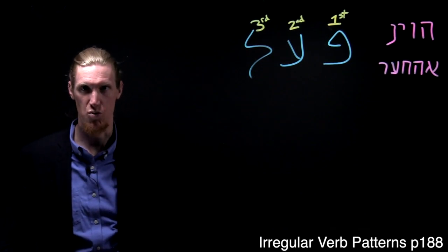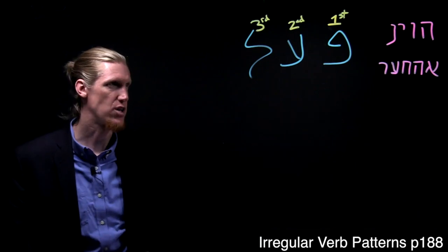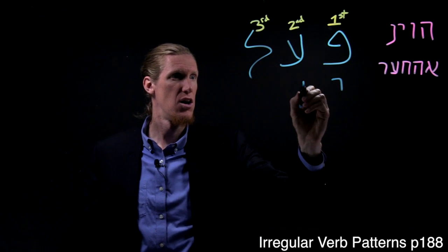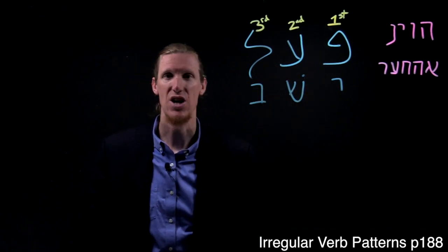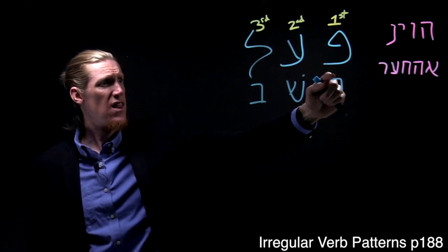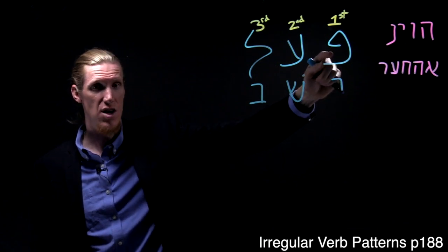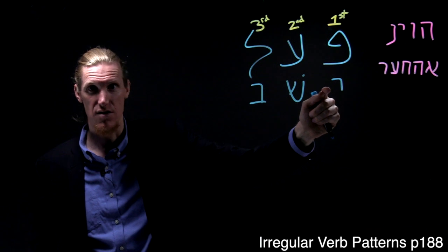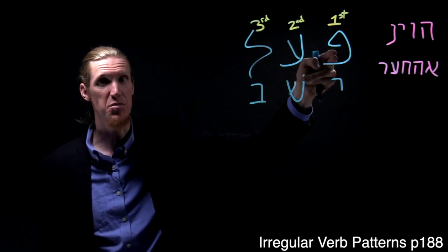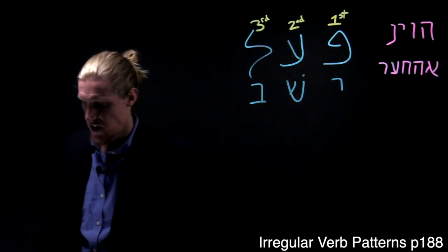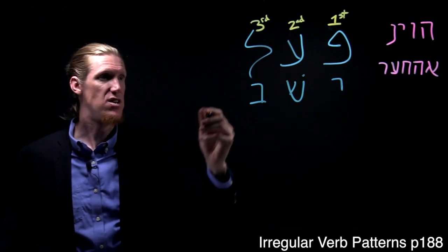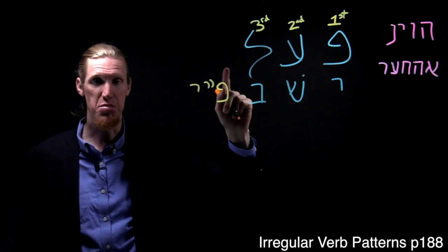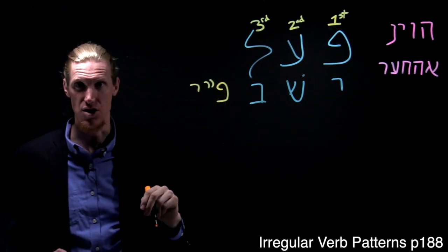Let me give you a couple of examples of words that fit into this. For instance, if we have the verb Yashav, the Yod is a weak letter, and that appears under Pei. It's the first letter in the root. Therefore, it's a Pei Yod verb. Did you catch that? Because the Yod is in the Pei position, which is the first letter. When you have a Yod in the Pei position, we call that a Pei Yod. Yashav is a Pei Yod verb.